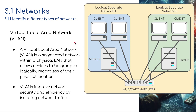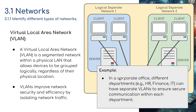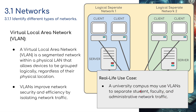A VLAN — virtual local area network — is a segmented network within a physical LAN that allows devices to be grouped logically, regardless of their physical location. Don't think of this as similar to virtual memory — it's not. VLANs improve network security and efficiency by isolating network traffic. Just like a normal LAN, characteristics include high-speed data transfer, limited to a small geographical area, and easy to manage and secure. In a corporate office, different departments — e.g. HR, finance, or IT — can have separate VLANs for secure communications. A university campus may use a VLAN to separate student, faculty, and administrative network traffic.